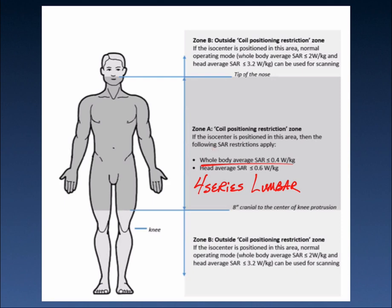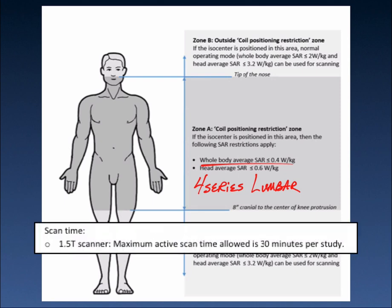We are going to acquire four series — well, five if you count the localizer — of lumbar spine exam. Additionally, one of the other conditions of use states that on a 1.5T system, the maximum active scan time, the total time of all the series, needs to be 30 minutes or less.